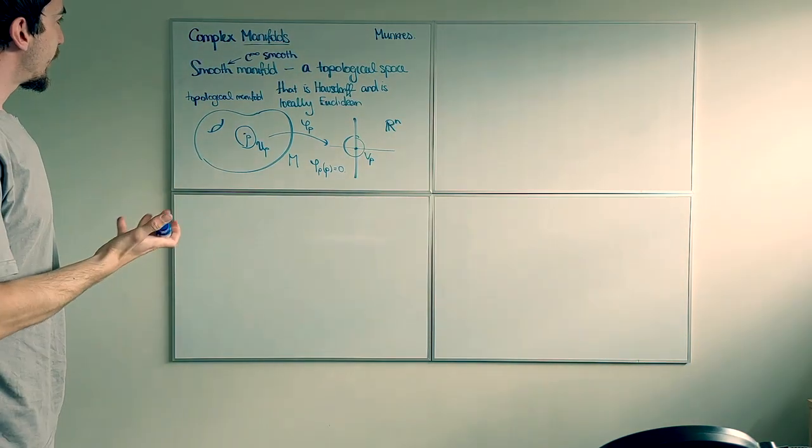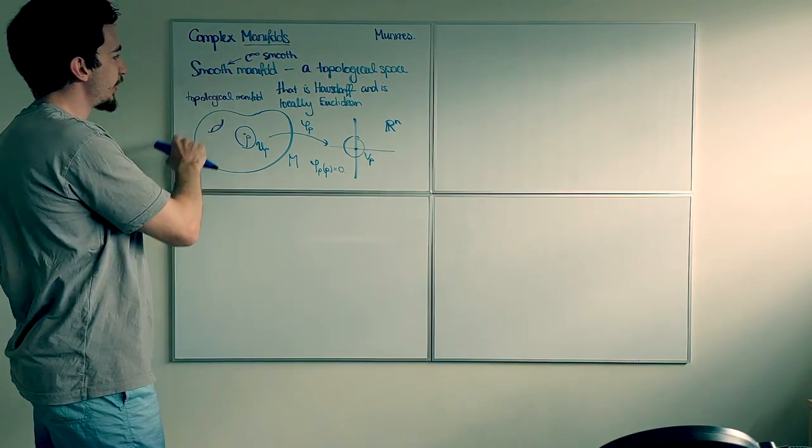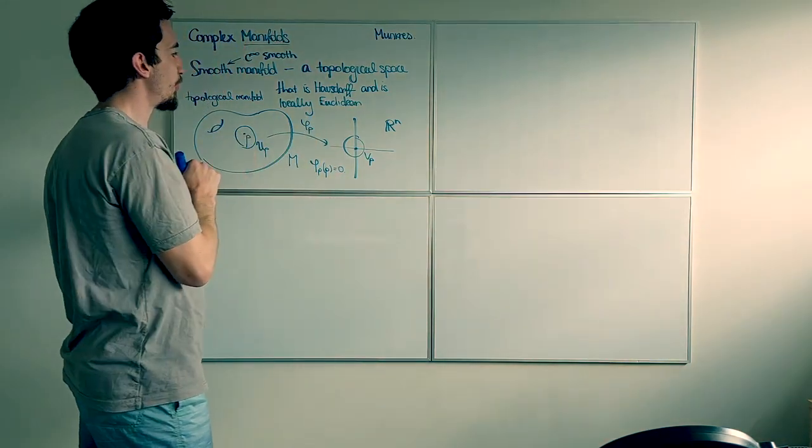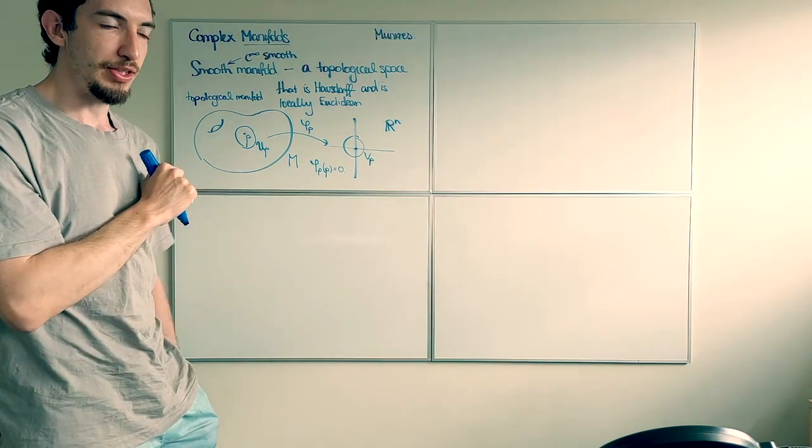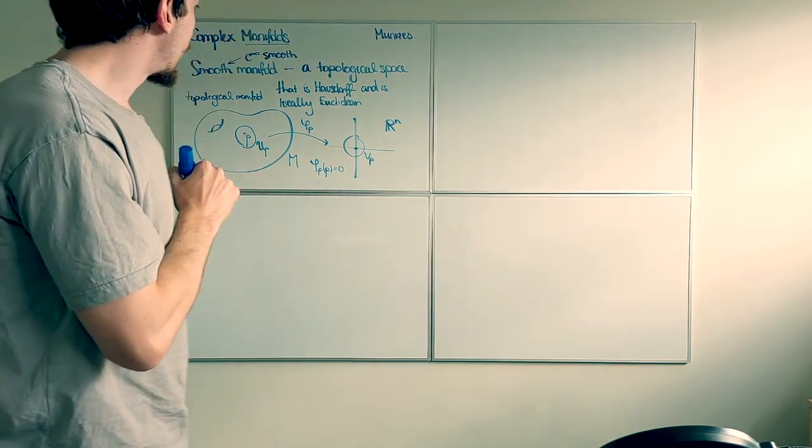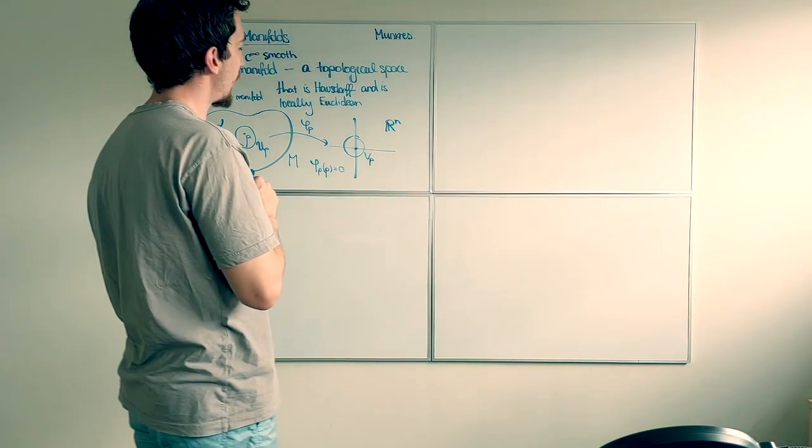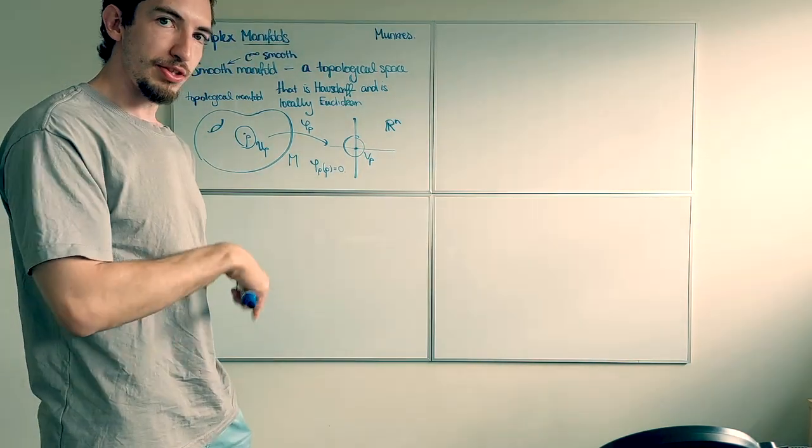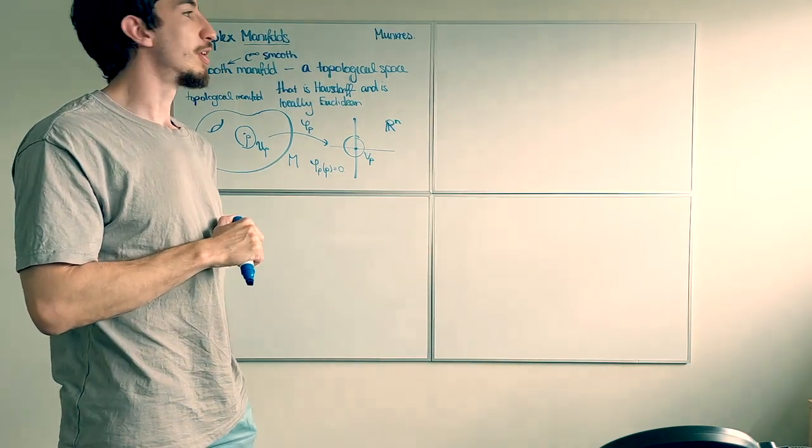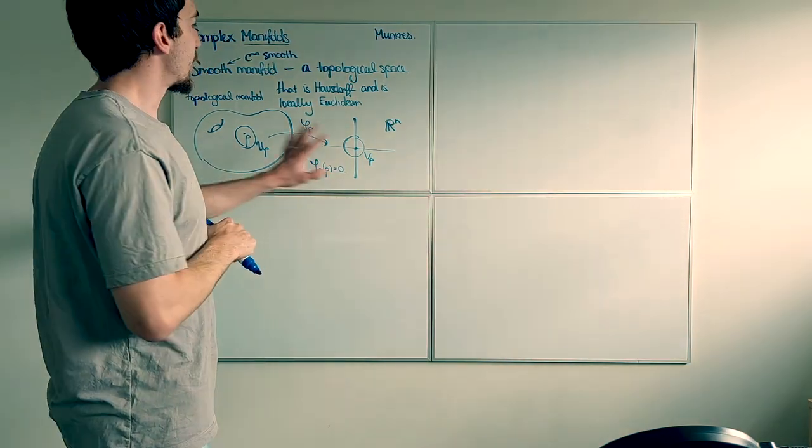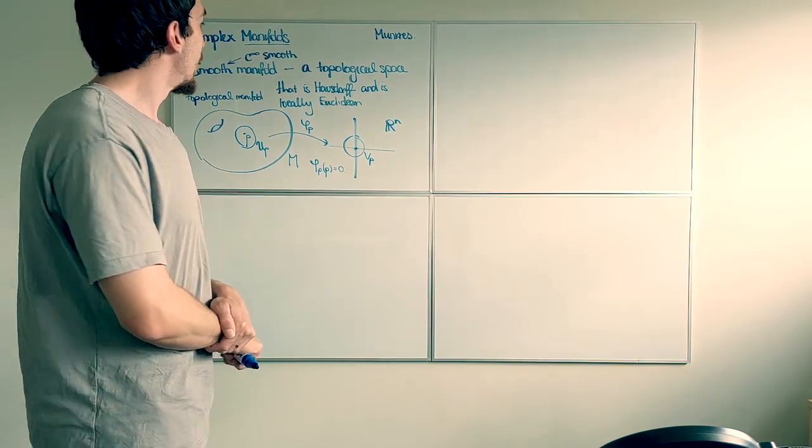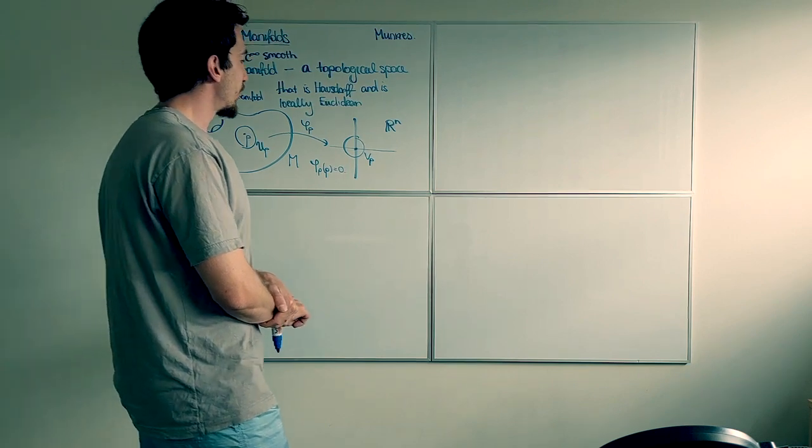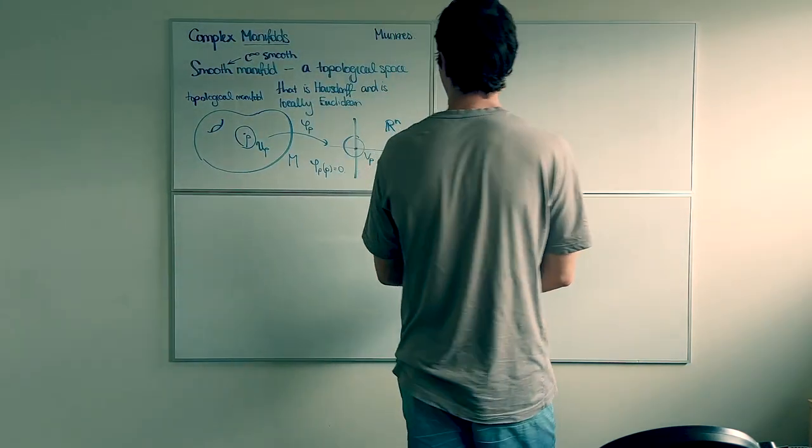Manifolds should be reserved for manifolds that are at least smooth. And by C infinity smooth, I mean infinitely many times continuously differentiable. Now, how do we impose some regularity constraint on the manifold? Well, this condition here, this local homeomorphism, this gives us a way of identifying the local neighbourhood around a given point with a copy of RN in which we have coordinates. To make sure that these coordinates are well defined, we should look at overlaps.